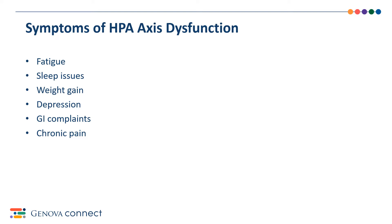We can sometimes experience symptoms such as fatigue, sleep issues, weight gain, depression, GI complaints, and chronic pain. HPA axis dysfunction is associated with many conditions, including high blood pressure, heart disease, gastrointestinal and immune dysfunction, diabetes and metabolic syndrome, depression, chronic fatigue, and persistent pain.